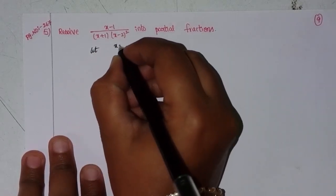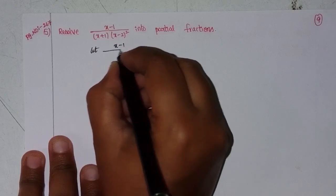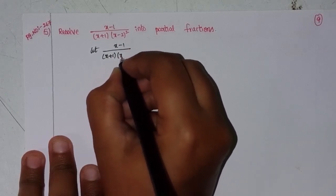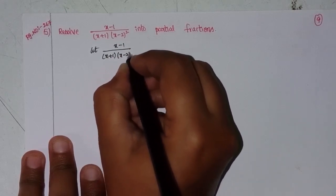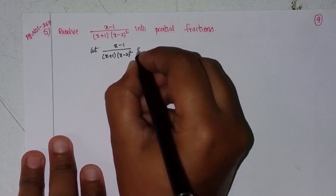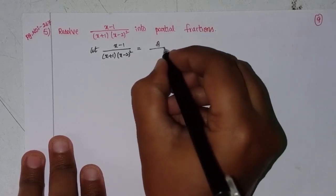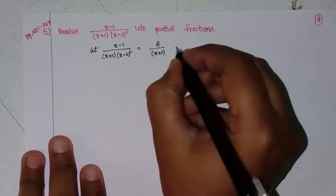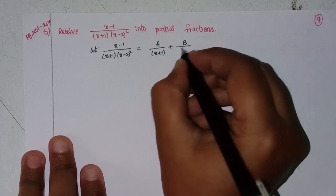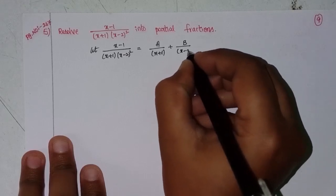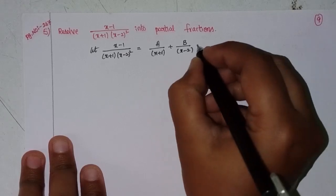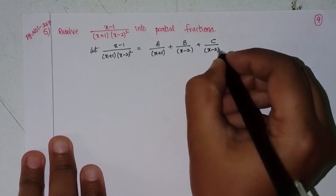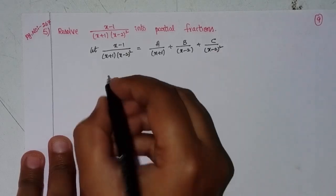Let (x minus 1) divided by (x plus 1) into (x minus 2) whole square, equal to A by (x plus 1), plus B by (x minus 2), plus C by (x minus 2) whole square.